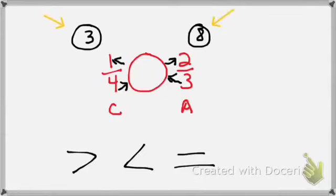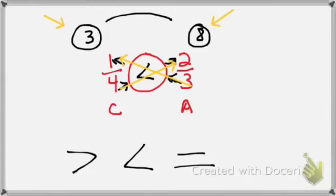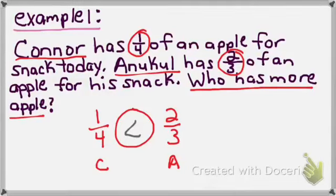Now all I simply need to do is compare the numbers in the circles. I'm comparing three and eight. Is three greater than, less than, or equal to eight? Three is less than eight. So therefore, one-fourth is less than two-thirds. So again, we're going to do cross-multiplication, bottom to top on a diagonal. Write the answer in the circle, bottom to the top on the diagonal. Write the answer in the circle. And then you are simply comparing these two whole numbers. That's how we solve comparisons of fractions. The answer was one-fourth is less than two-thirds.